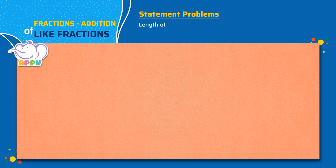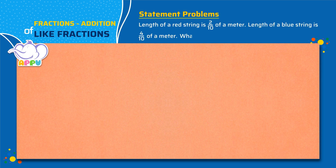Length of a red string is 2 by 10 of a meter. Length of a blue string is 4 by 10 of a meter. What is the total length of the red and blue string?